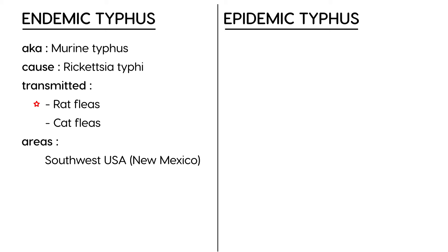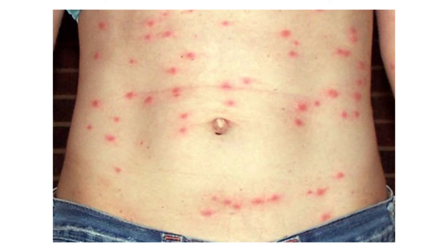For example, the state of New Mexico is often mentioned. Symptoms are unfortunately very generic and difficult to distinguish from anything else, so you have to rely on other clues. One thing that is very specific is the rash — it has a macular, papular appearance that is also erythematous.